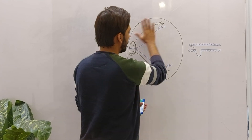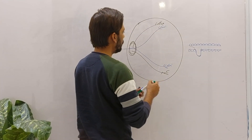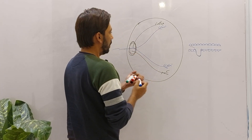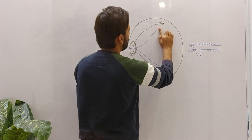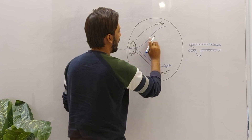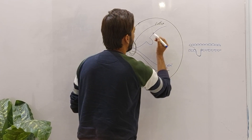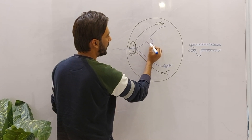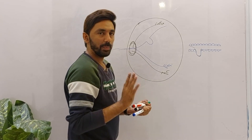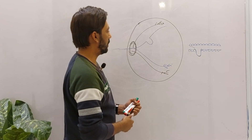Looking at the fundus diagram, consider this as a capillary. A focal dilatation on that capillary is what is called a microaneurysm. This visual representation shows the outpouching that characterizes a microaneurysm.